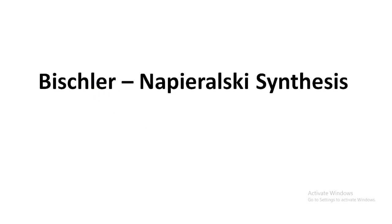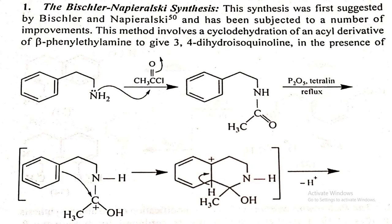Moving forward to the Bischler-Napieralski synthesis. This is the overview of the synthesis. The Bischler-Napieralski synthesis includes the starting material as beta-phenylethylamine. Let's understand the structure and try to memorize it based on IUPAC nomenclature so that it will be easy for us to understand the whole mechanism of this synthesis.